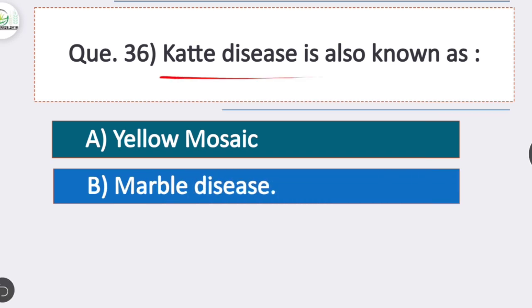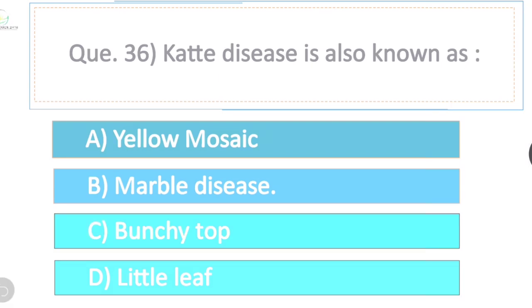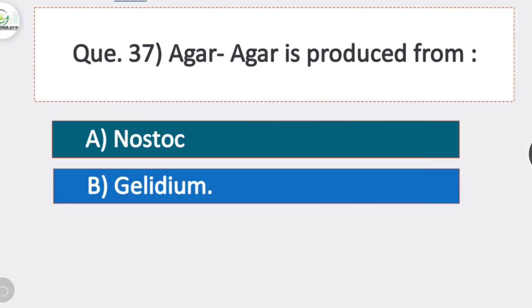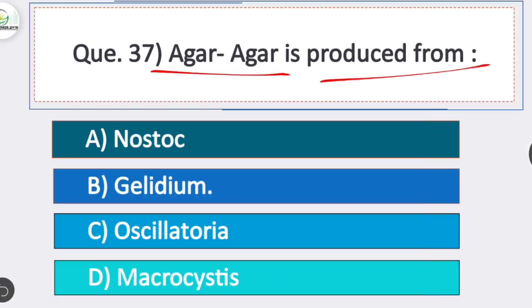Question 36: katte disease is also known as? Option B is correct — marble disease, which occurs in cardamom. Question 37: agar-agar is produced from? Option B is correct — Gelidium, which is a red algae used for commercial production of agar-agar.